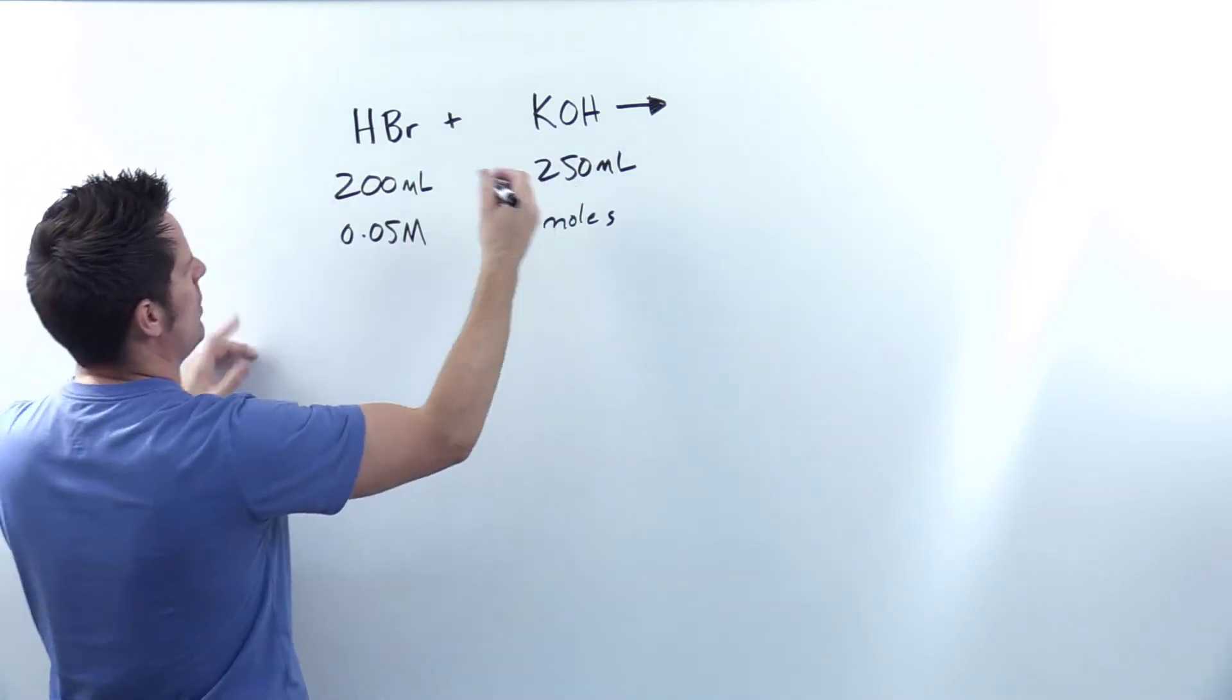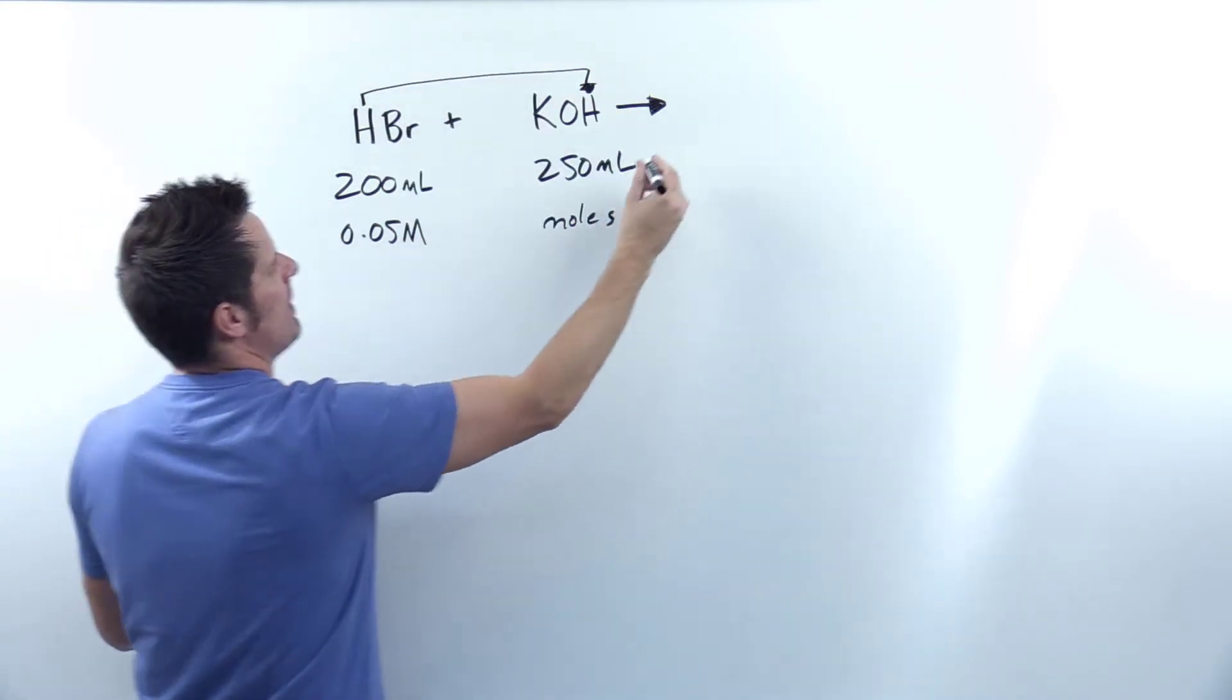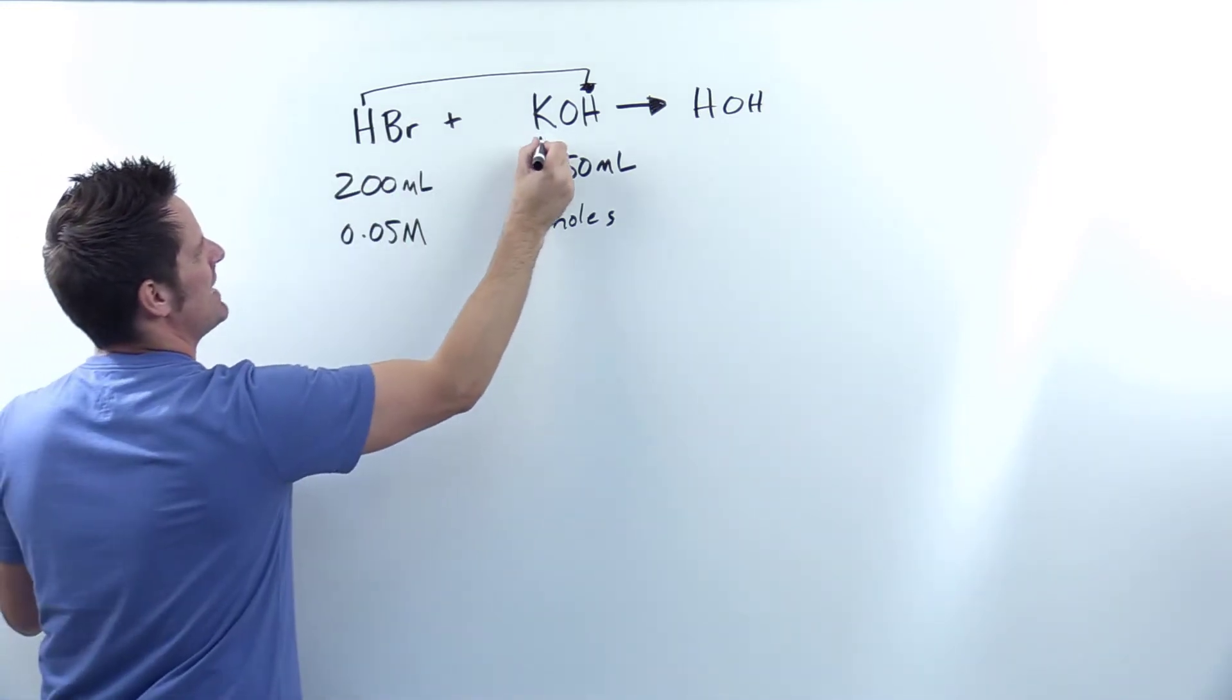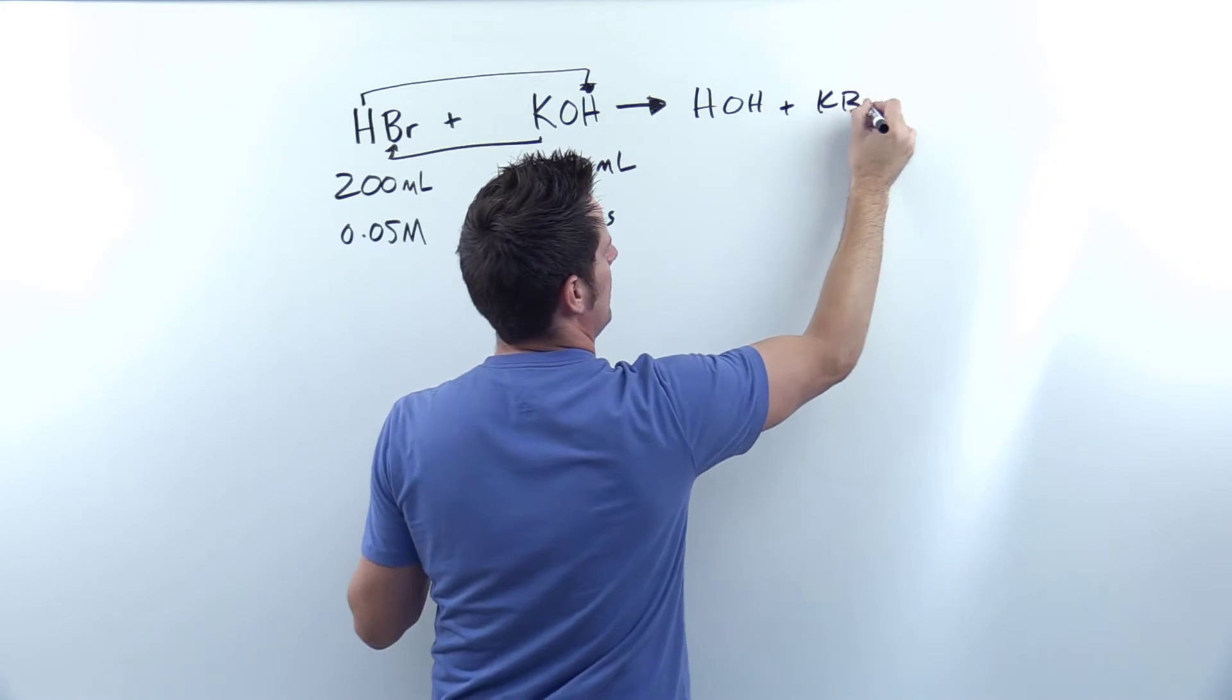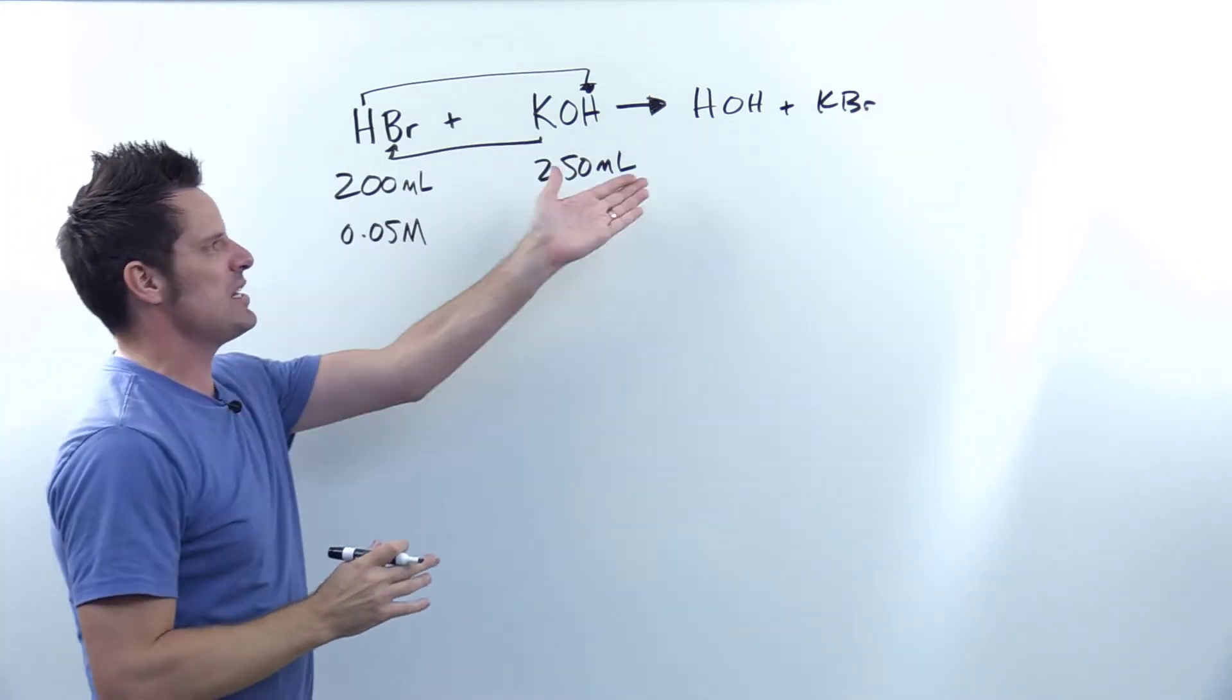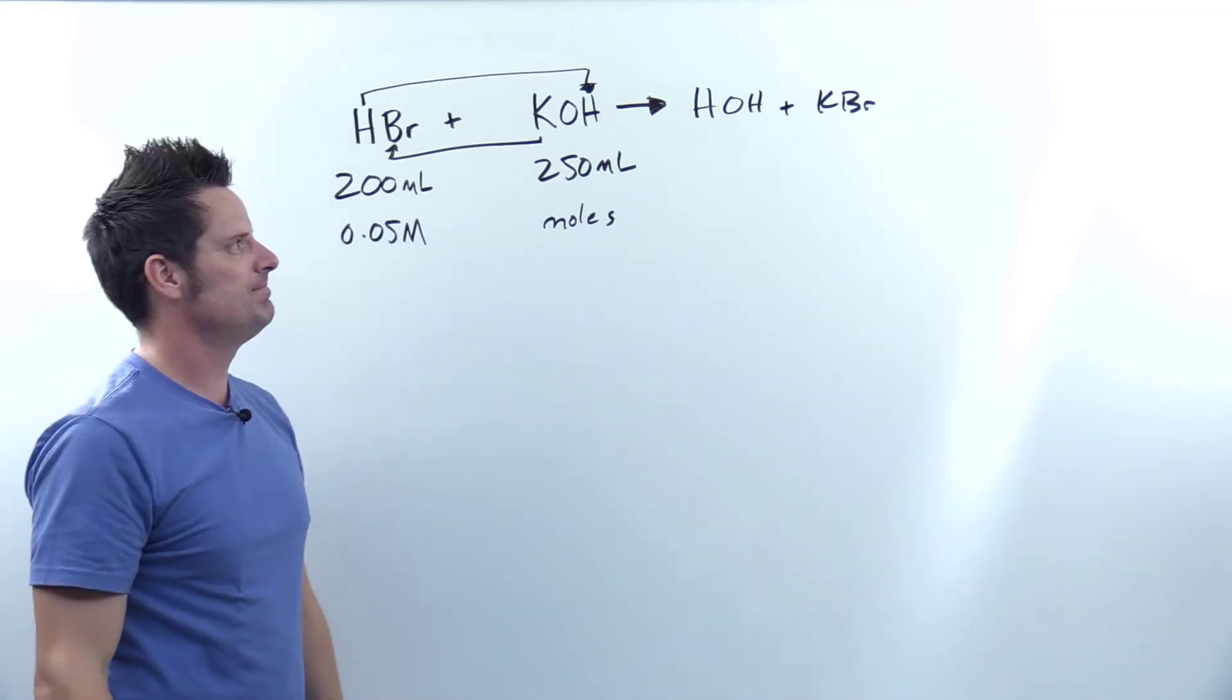So I do a partner swap. This H goes together with my OH to form H2O or HOH in order to keep the pattern consistent, and my K goes together with my Br. So I get KBr as a byproduct. You'll notice that this equation as written is actually balanced. So it forms H2O and a salt, an inorganic ionic compound salt. Make sense? Cool.